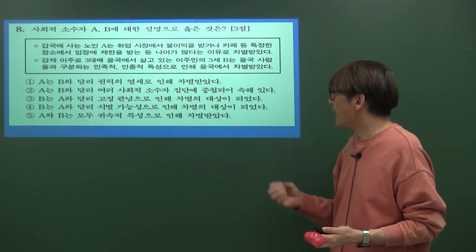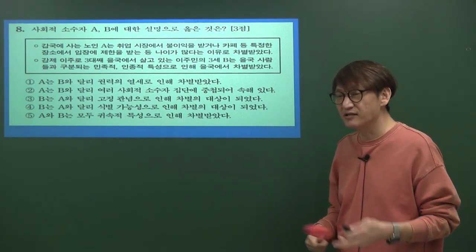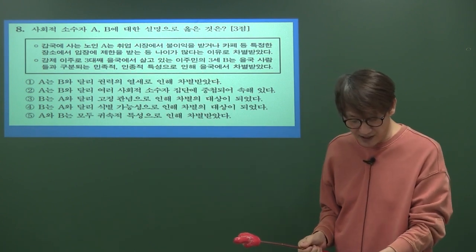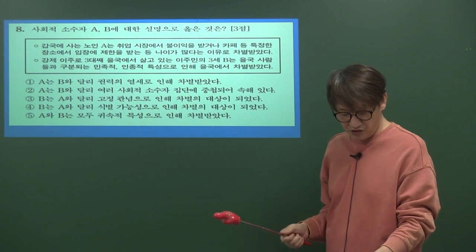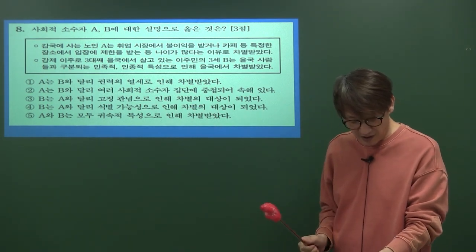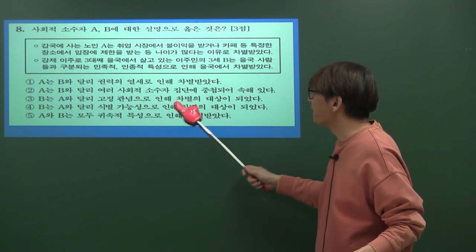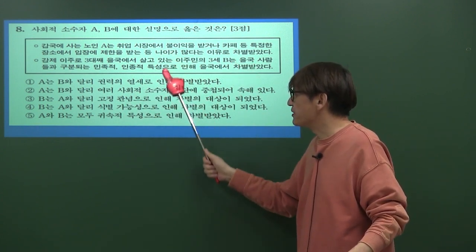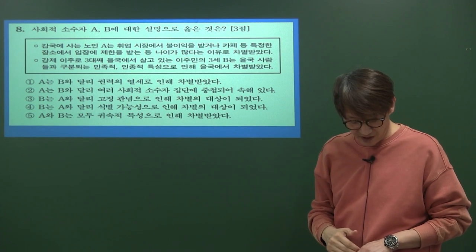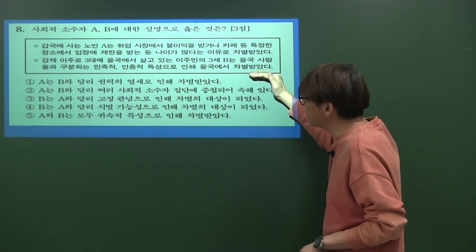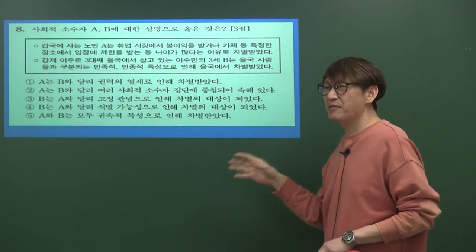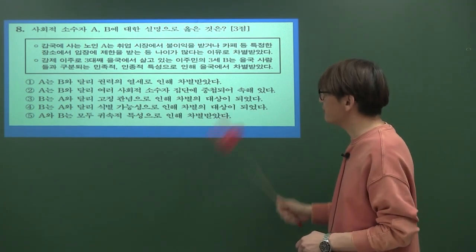B는 다른 나라에서 이주한 부모님의 자녀인 이민 3세로, 민족적·인종적 특성에 의해 을국에서 차별받고 있습니다. A는 나이라는 귀속적 특성 때문에 차별받고, B는 인종적 차이 때문에 차별을 받는 특색을 보여주고 있습니다. 지문 해석을 잘하면 사회적 소수자 A와 B의 차이를 알 수 있습니다.